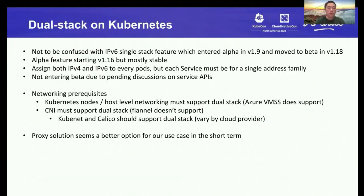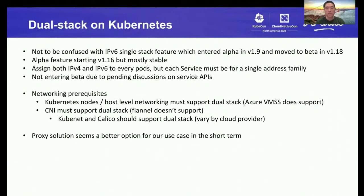We did do some investigation on running dual stack on Kubernetes. Don't confuse it with the IPv6 single-stack feature in Kubernetes, which already entered alpha in 1.9 and moved to beta in 1.18. Dual stack is different — it started as alpha in 1.16, but when talking to contributors it seems the feature is mostly stable. The reason it hasn't been promoted to beta is mostly due to some pending discussion on the service APIs, which actually would not affect our use case.